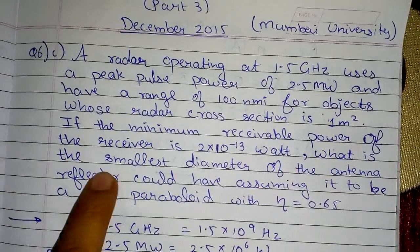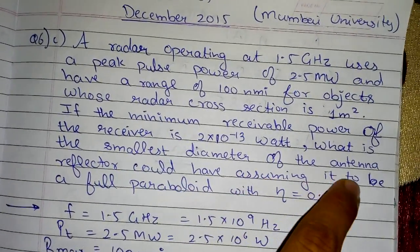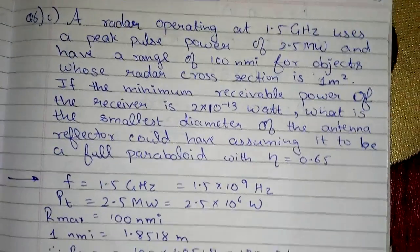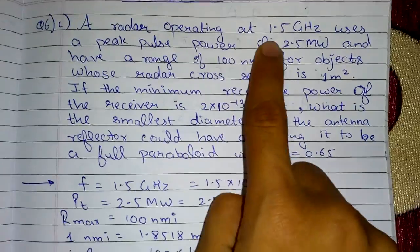If the minimum receivable power of the receiver is 2×10^-13 watts, what is the smallest diameter of the antenna reflector could have assuming it to be a full paraboloid with η = 0.65?